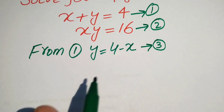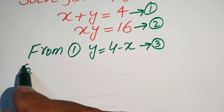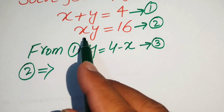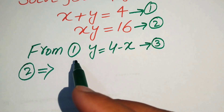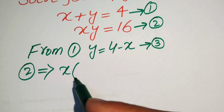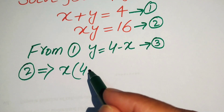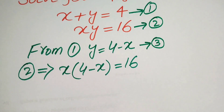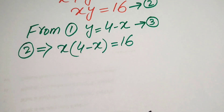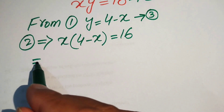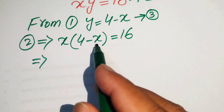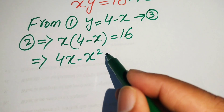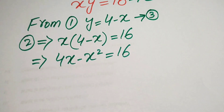We substitute the value of y into equation number two. So equation two becomes x times (4 minus x) equals 16. We multiply x on both terms and get 4x minus x² equals 16.